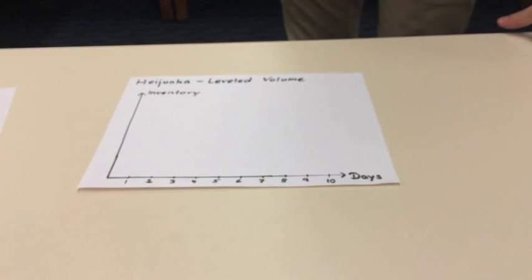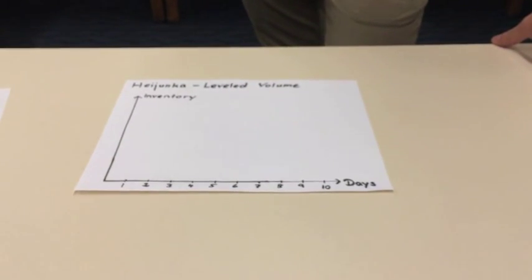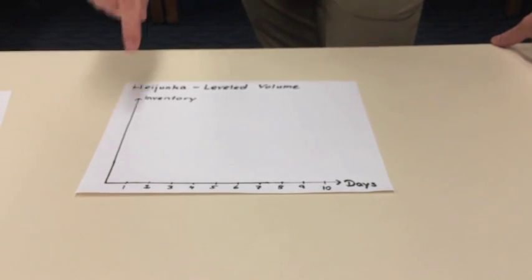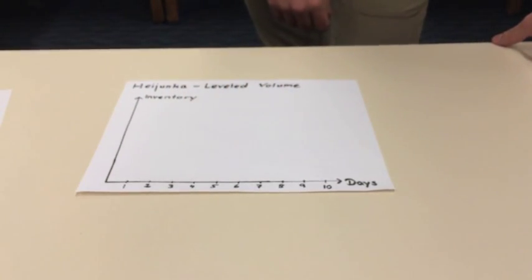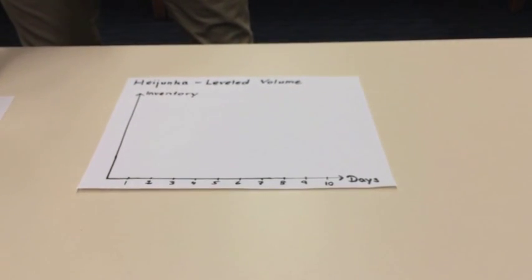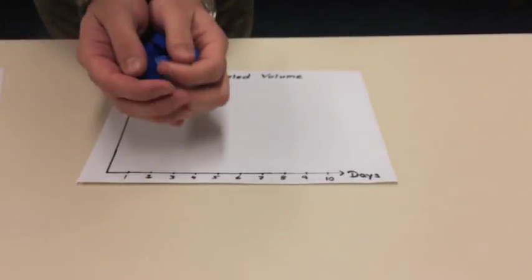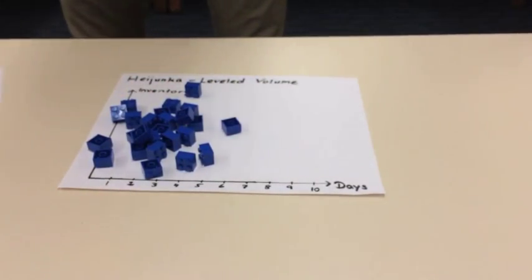The third principle is HAYUNKA, which means leveled production. Instead of producing large lots for a longer demand period, you produce in small lots for shorter demand periods. For example, without leveled production, you would store the inventory necessary for the production of 100 units for the next 10 days.